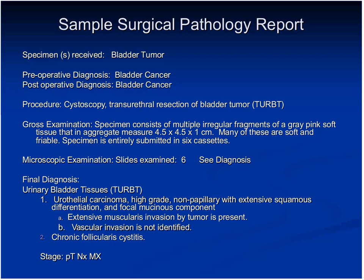There was a question about infiltrating high-grade urothelial carcinoma with extensive glandular differentiation and areas suspicious for angiolymphatic invasion — that's exactly correct, those are some of the variants we see. We also look for vascular or angiolymphatic invasion, where tumor cells go into blood vessels. There was also a question about sarcomatoid bladder cancer, which we'll address during the question and answer period.